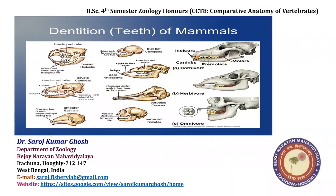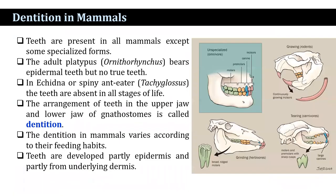I'm going to discuss the topic of dentition in mammals. Teeth are present in all mammals and they are modified and specialized depending on the food and feeding habits. The adult platypus bears epidermal teeth but no true teeth are present. In echidna, or spiny anteater, teeth are absent at all stages of life. The arrangement of teeth in the upper jaw and lower jaw is known as dentition, and it varies according to feeding habit. Teeth are developed partly from the epidermis and partly from the underlying dermis.